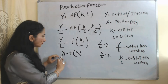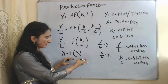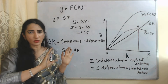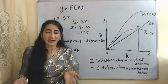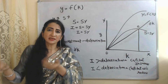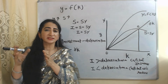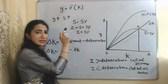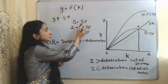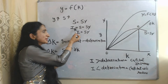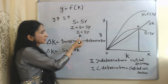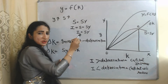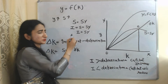Output per worker is a function of capital per worker. As we change capital per worker, output per worker will also change. As capital per worker increases, output per worker also increases. As output per worker increases, our income increases. As income increases, saving also increases. Since saving is a constant fraction of national income — S = sY — we can also write investment I = sY.